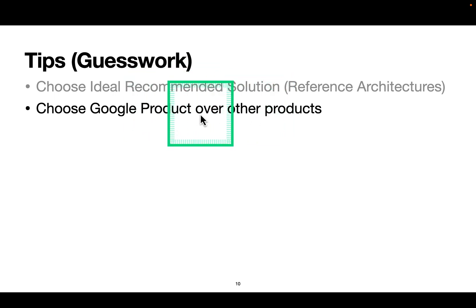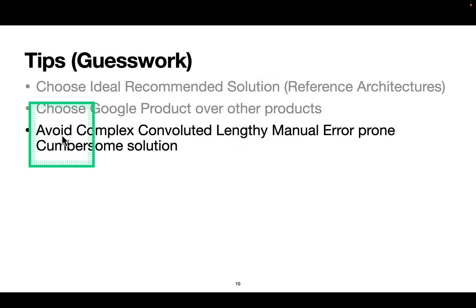Avoid complex, convoluted, lengthy, manual, error-prone, cumbersome solutions. What I mean is, if you see some solution like option A, B, C, D and one of them is talking about like 'I'll spin up a virtual machine on Google Compute Engine, then I'll write a shell script, bash script, and I will connect to this service, that service, and do some magic to make the solution work,' then try to avoid those kind of solutions.